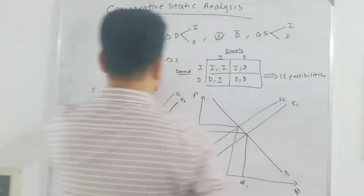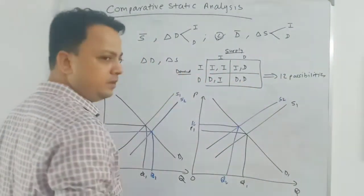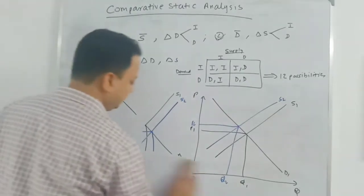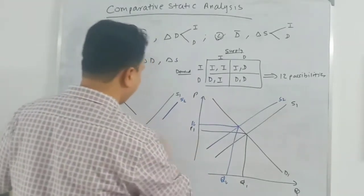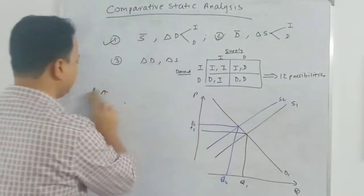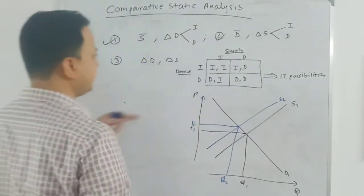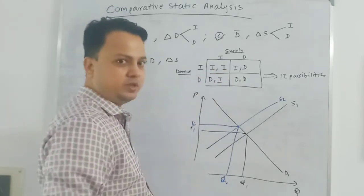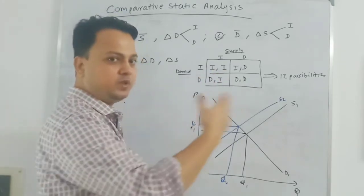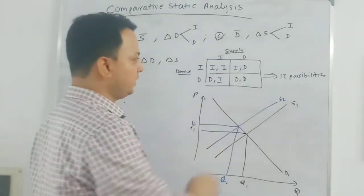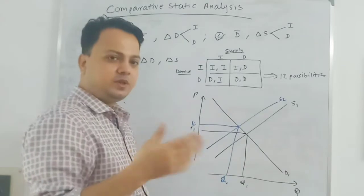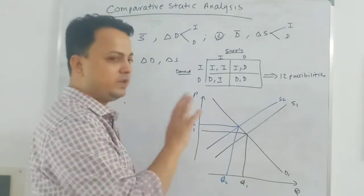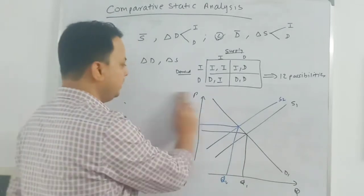Now we are changing both demand and supply together and looking at what we will be getting. First case: the demand curve also increases and supply also increases — that means both will shift rightward. I said there will be three possibilities associated with any changes, which we will be studying in economics.